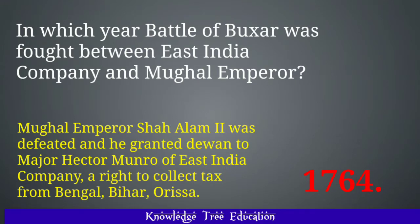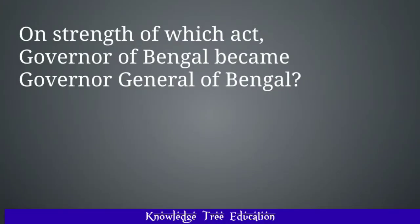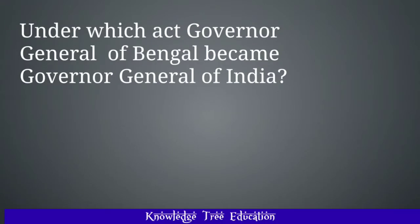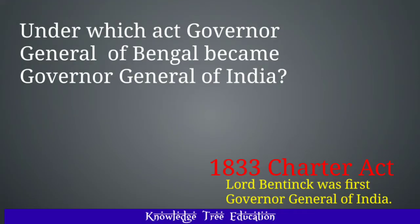Mughal Emperor Shah Alam II was defeated and he granted the right to Major Hector Munro of the East India Company to collect tax from Bengal, Bihar and Odisha. On the strength of which act did the Governor of Bengal become Governor General of Bengal? And the act is the Regulating Act 1773. Warren Hastings was the first Governor General of Bengal. Under which act did the Governor General of Bengal become Governor General of India? And the act is the Chartered Act 1833. Lord Bentinck was the first Governor General of India.